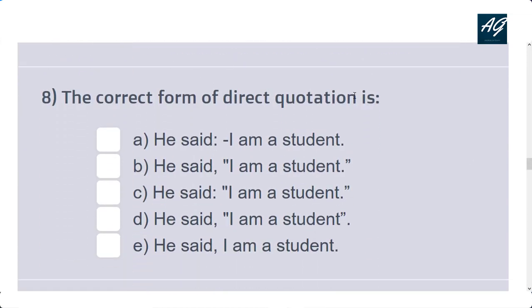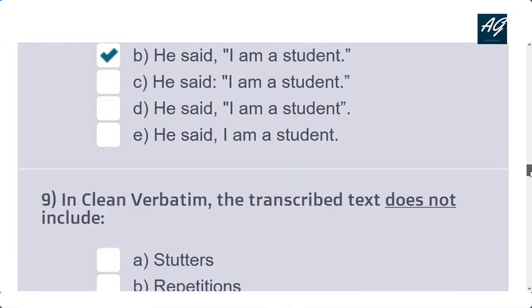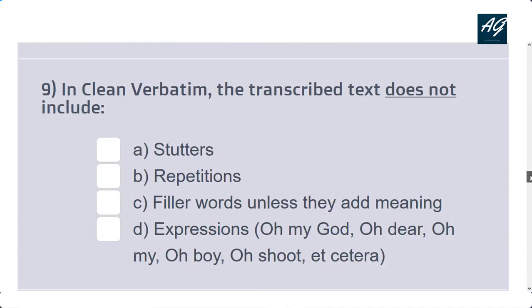The eighth question asks which is the correct form of a direct quotation. Option B is the correct form of a direct quotation. The ninth question is: in clean verbatim, the transcribed text does not include what?